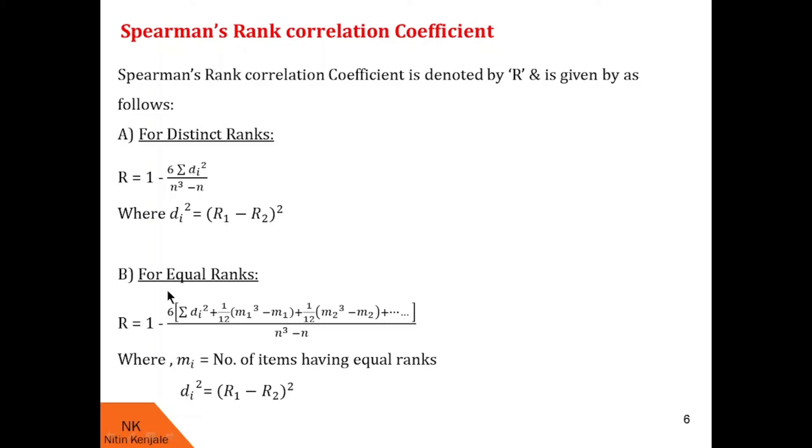Now when we see that the ranks are equal, then coefficient of correlation is given by 1 minus 6 times summation Di square plus 1 by 12 into M1 cube minus M1 plus 1 upon 12 into M2 cube minus M2 and so on whole divided by N cube minus N, where Mi denotes the number of items having equal ranks.